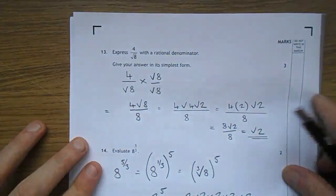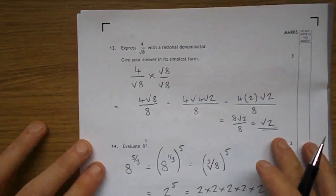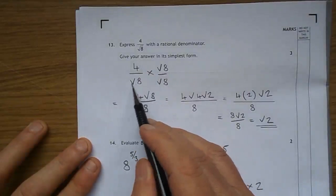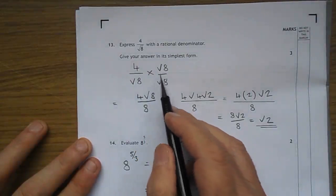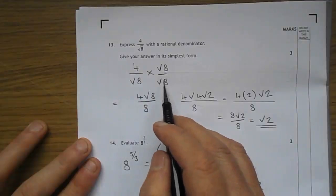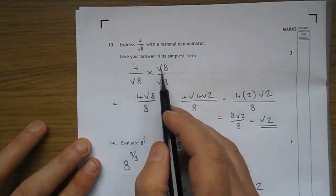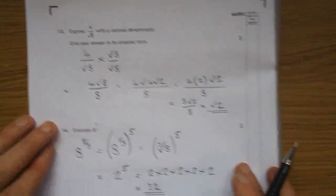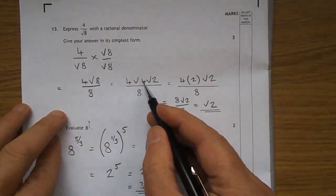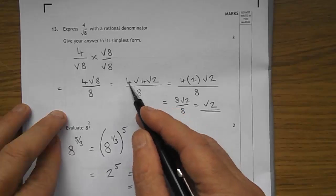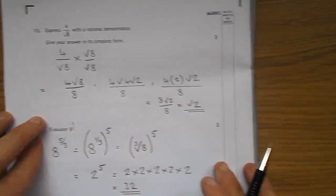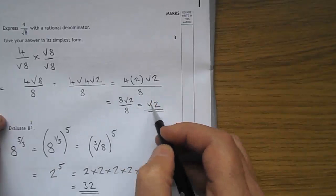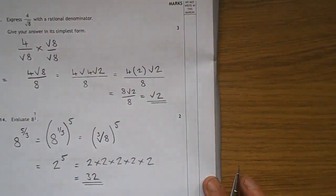Question 13: express 4 over root 8 with a rational denominator. You multiply 4 over root 8 by root 8 over root 8, essentially multiplying by 1. You're not making it bigger or smaller, just changing its appearance. 4 times root 8 is 4 root 8. Root 8 times root 8 is 8. So 4 root 8 over 8. Root 8 is root 4 times root 2. Root of 4 is 2, so 4 times 2 is 8 over 8, which simplifies to root 2.